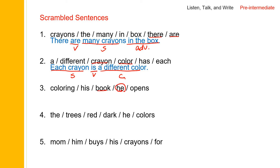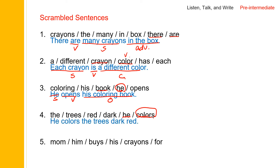He — he is the subject. He opens his coloring book. He is the subject, 'opens' is the verb, 'his coloring book' is the object. Then he is the subject again — 'color' is now a verb. He colors the trees dark red. He is the subject, 'colors' is the verb, 'the trees' is the object, and 'dark red' is an objective complement because he is talking about the trees.